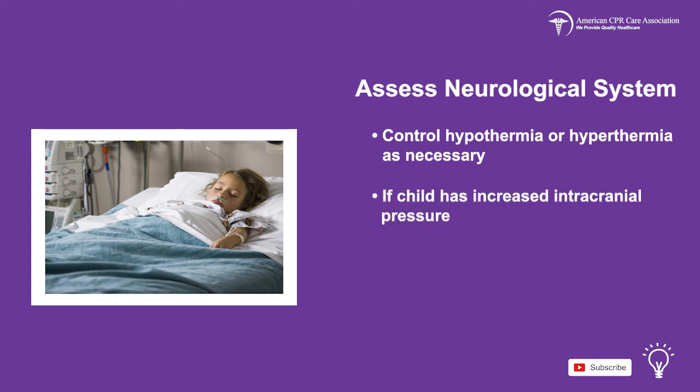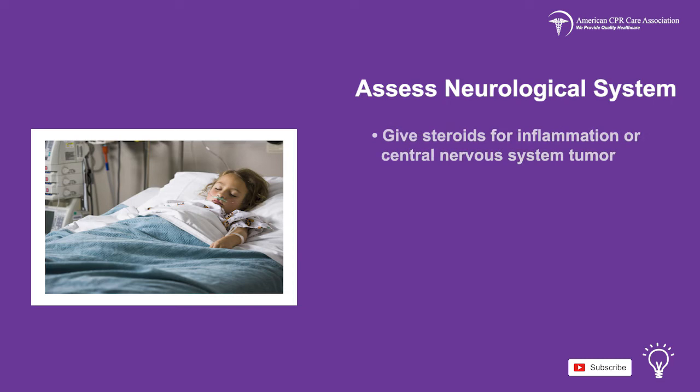If the child has increased intracranial pressure, keep their head in a midline position and ventilate them. Give them steroids for inflammation or a central nervous system tumor. Use mannitol or saline for herniation.